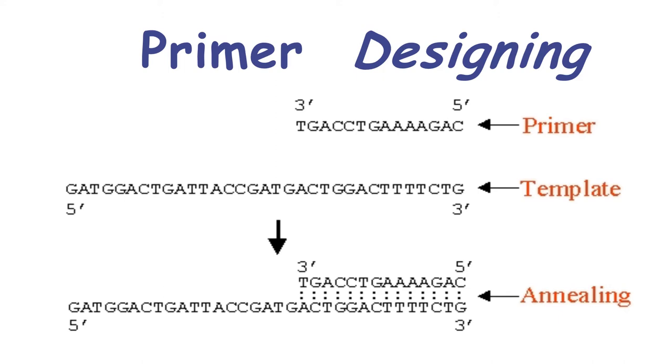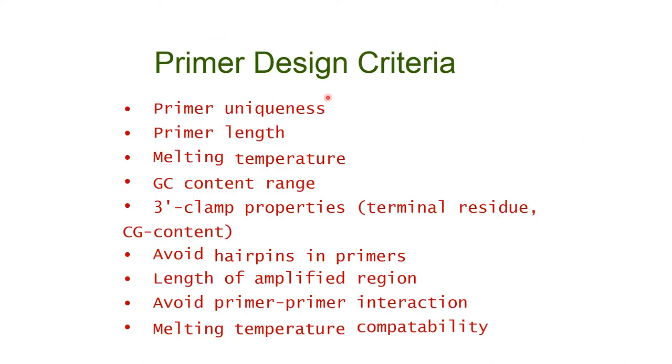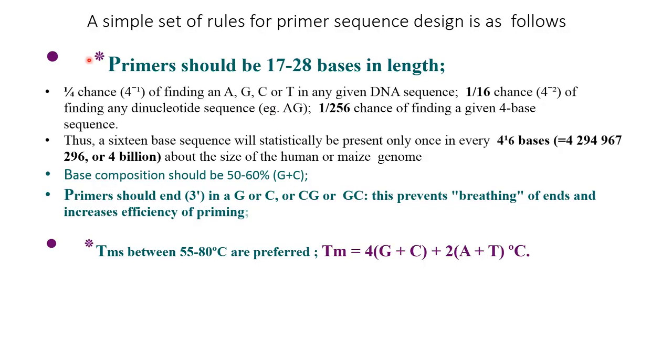Now what are the primer designing criteria? One is primer uniqueness, primer length, melting temperature, GC content range, 3 prime clamp properties like terminal residue or CG content, avoid hairpins in primers, length of amplified region, avoid primer-primer interaction, melting temperature compatibility. These are all primer designing criteria.